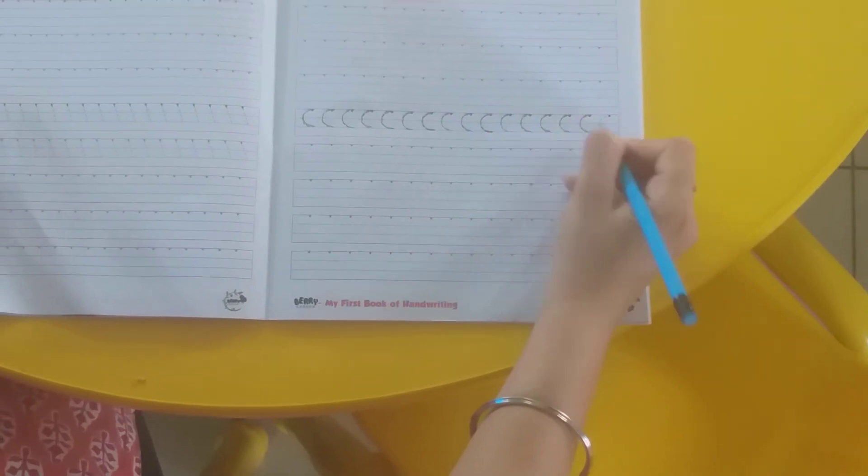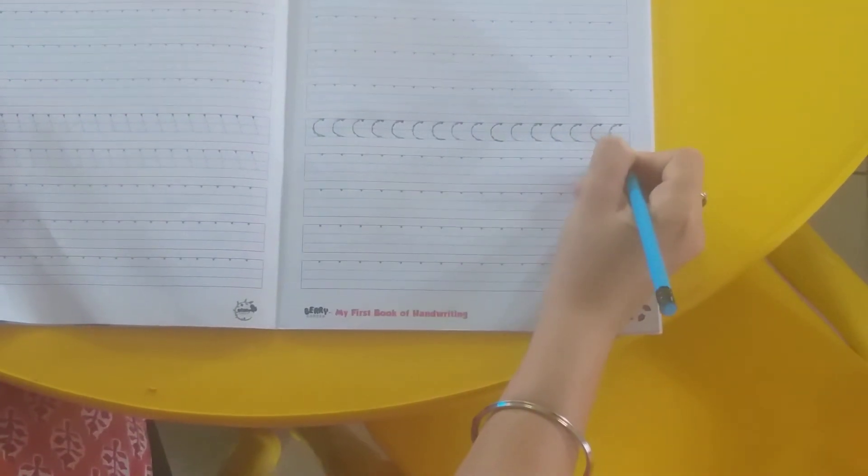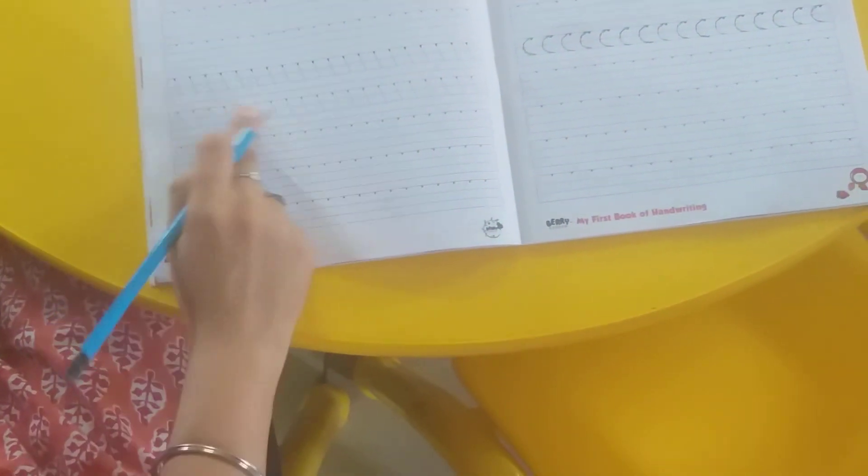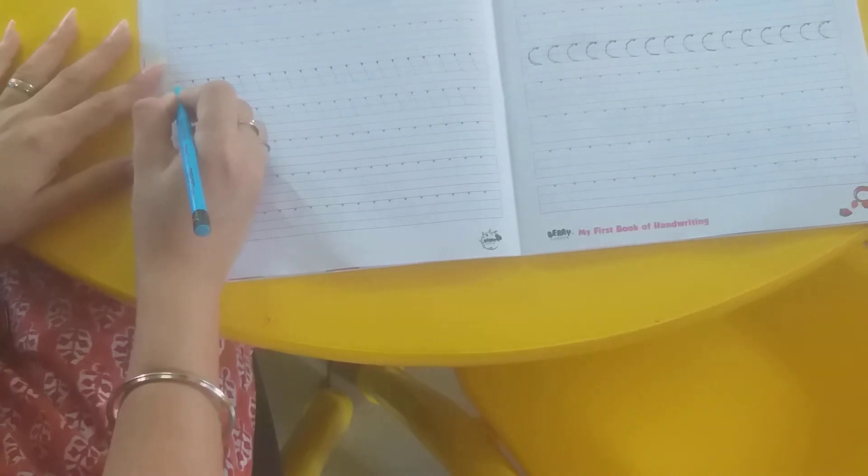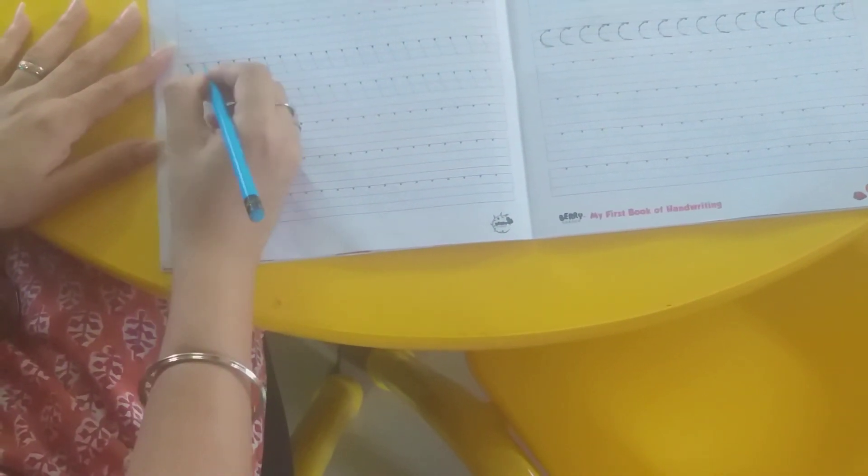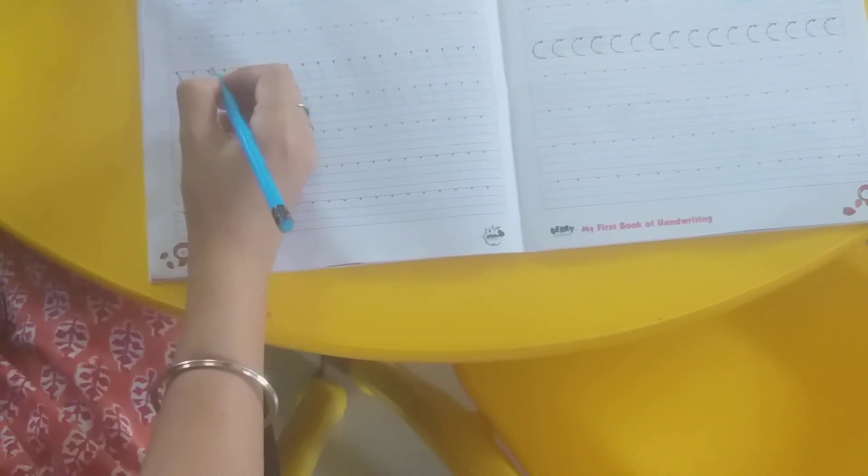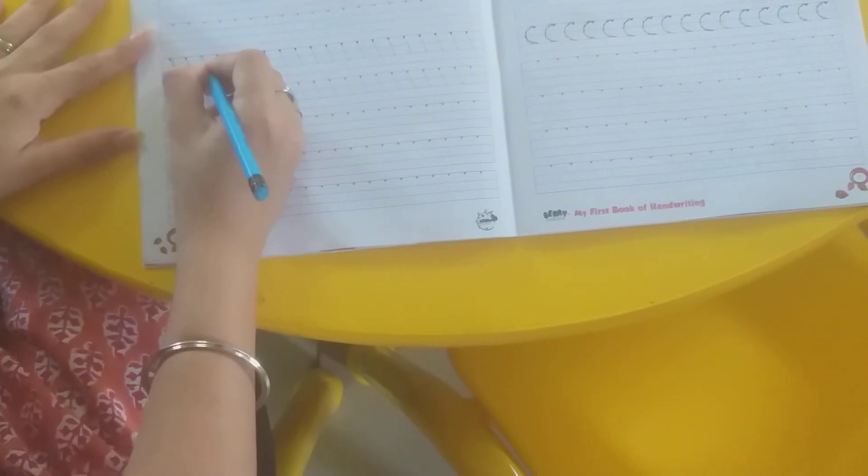Dhyan se karna bachchao. Abhi ham ye to karna bhuul gaya. Ye line to baqi hai hai. Right? To abhi ham ye line kareenge. Left to right. Right to left karli. Abhi ham left to right kareenge.